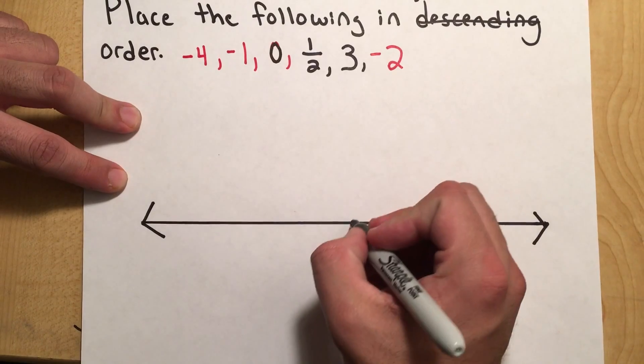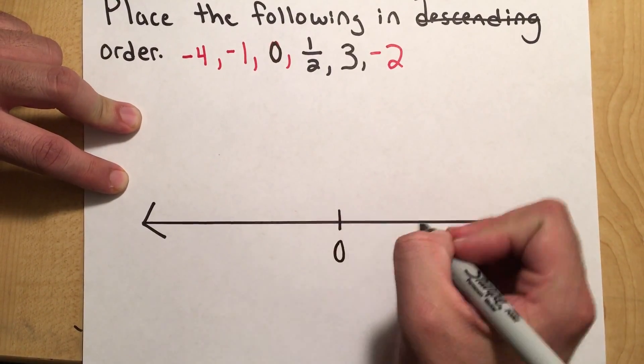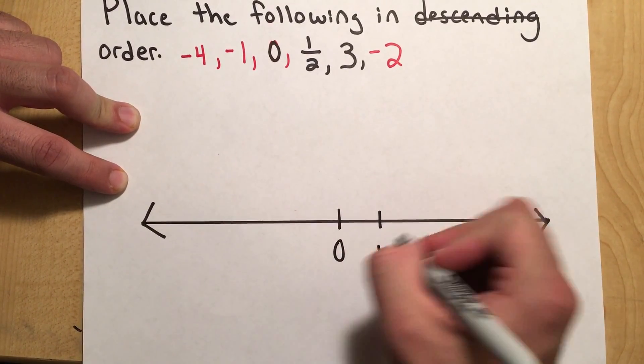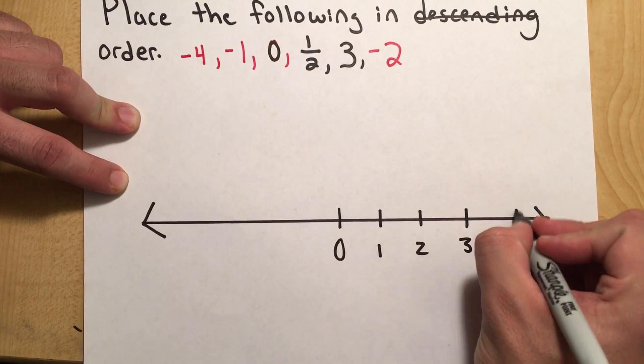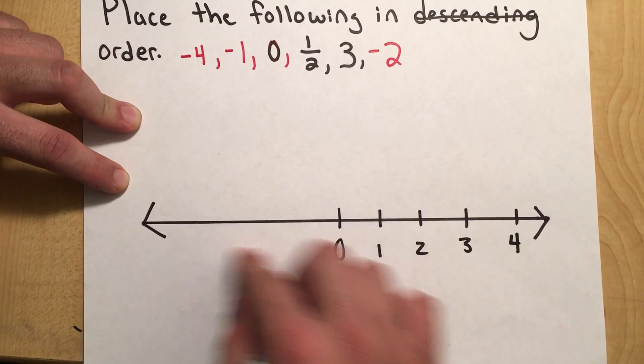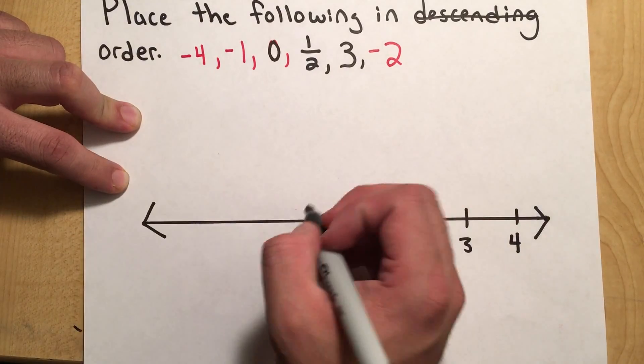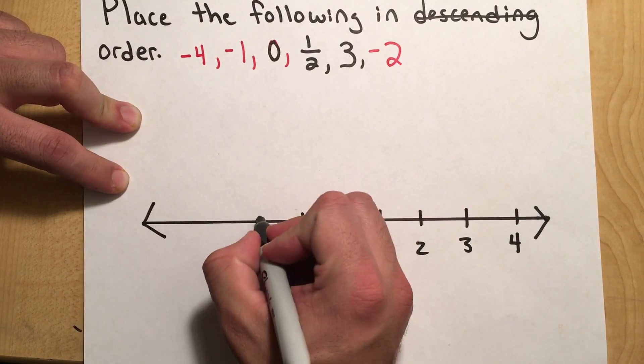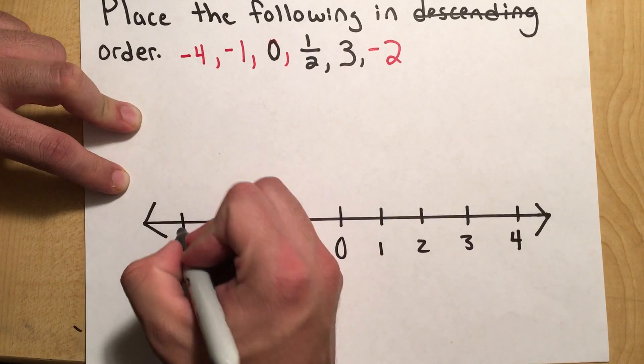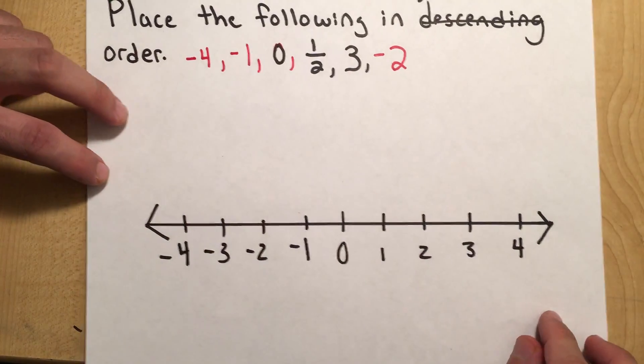So I'm going to put right in the middle, I'll put 0, then it would be 1, 2, 3, and 4. And then to the left, I want to make sure that I get all the way up to negative 4 so I can plot that one in there. Negative 1, negative 2, negative 3, and negative 4.